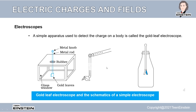There is one disadvantage: you can only know whether an object is charged or not, but there is no way to tell whether it is positively or negatively charged. To determine the sign of the charge, you would need another object with a known charge to compare. But an electroscope is a basic apparatus that tells you whether an object is charged or not.